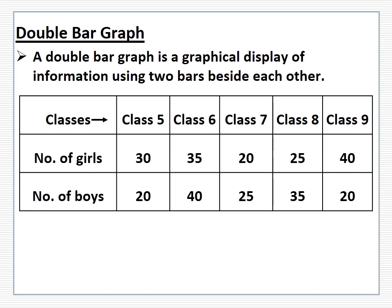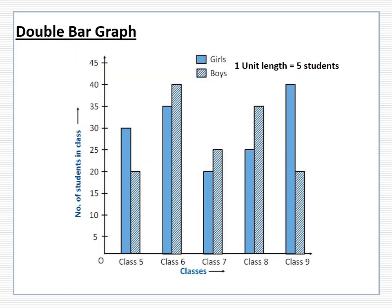Let us understand by one example. Here, class-wise number of boys and girls data has been given. We will understand how to draw a double bar graph. We have to represent the data of number of boys and girls in different classes. First of all we will take one graph paper and we will take a scale. Here we will take a scale where 1 unit is equal to 5 students.